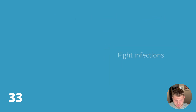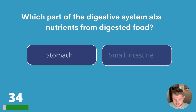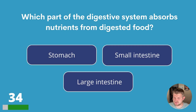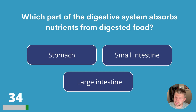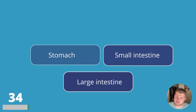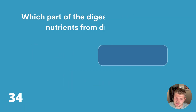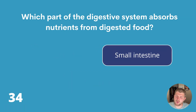Question thirty-four. Which part of the digestive system absorbs nutrients from digested food? Stomach, small intestine or large intestine? The answer is small intestine.